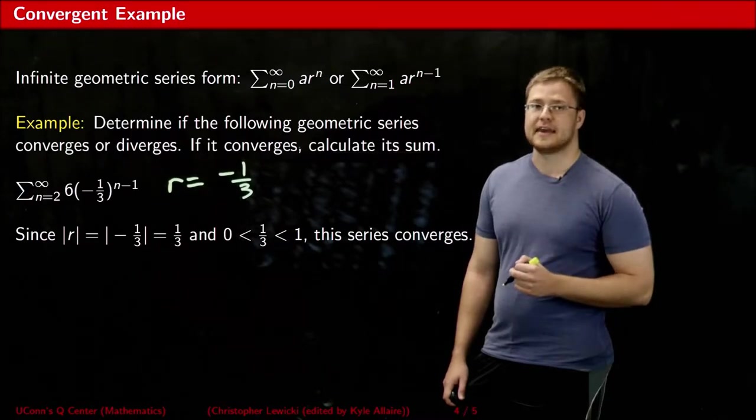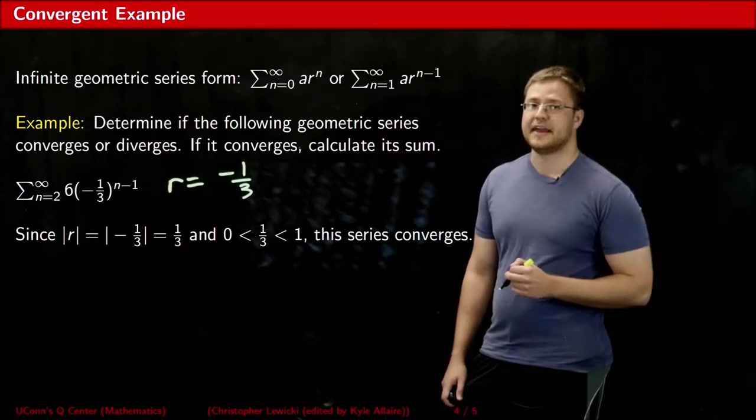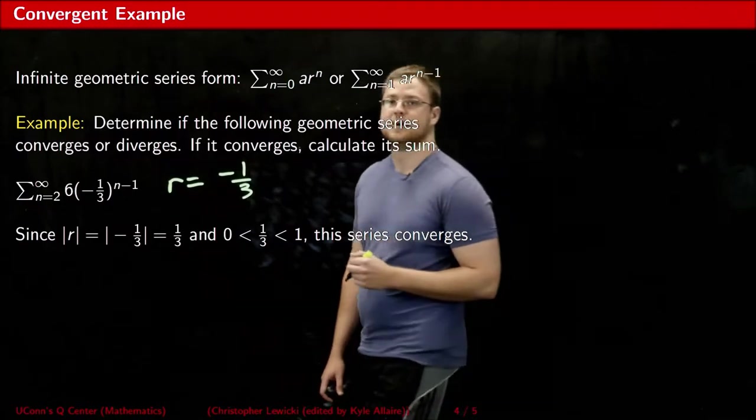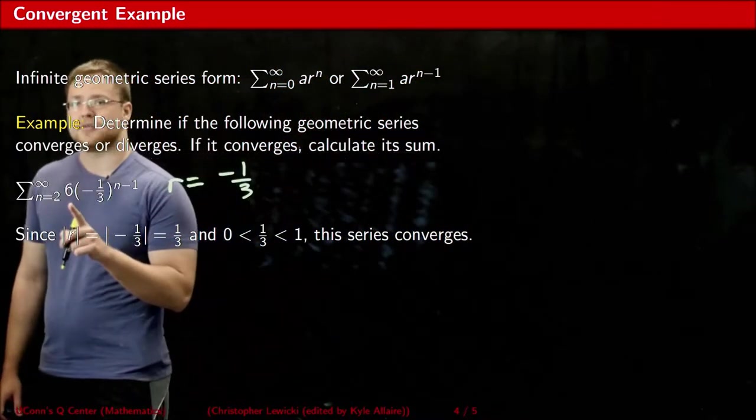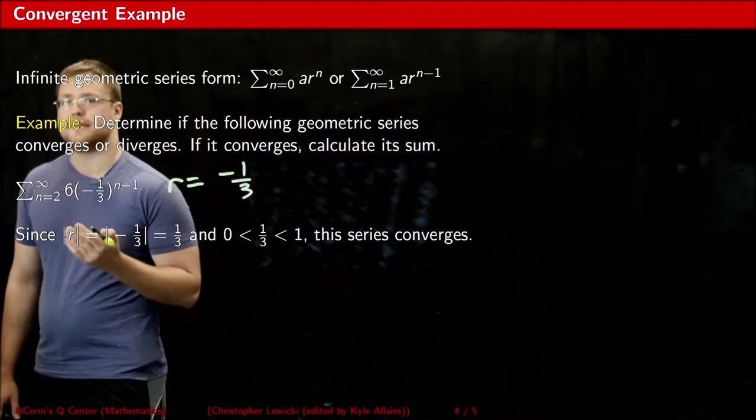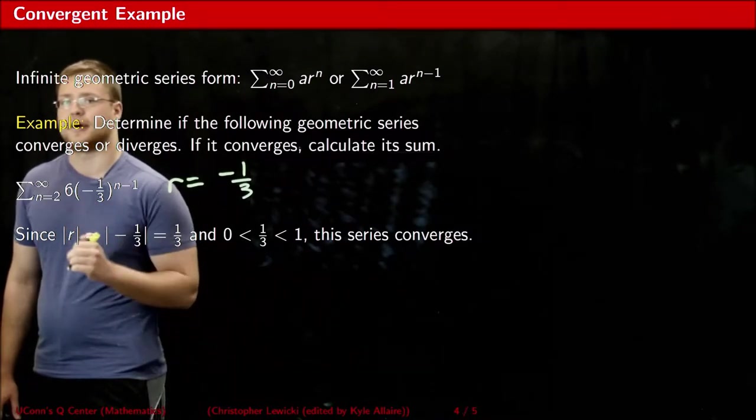As for calculating the infinite sum, we need to be very careful about our a value. Intuition might tell you that your a value is 6 because you're used to your a value being right in front of the r part. However, notice that the lower bound of this series is 2.